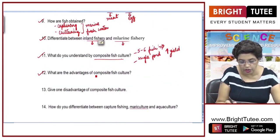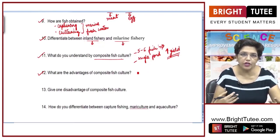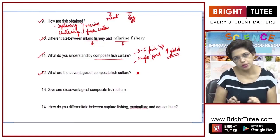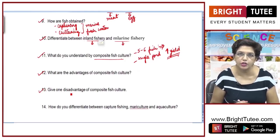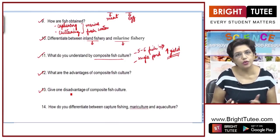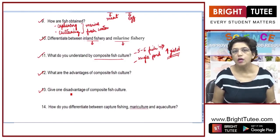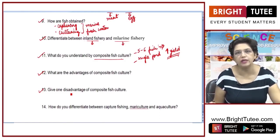Next question: what are the advantages of composite fish culture? One advantage is improved yield. Second, since these fish do not compete for food, all the food available in the pond is utilized. One disadvantage is that fish breed only during the monsoon season, so good quality seed is not available throughout the year. This disadvantage can be overcome by providing hormonal stimulation to the fish in their feed so that they reproduce throughout the year.